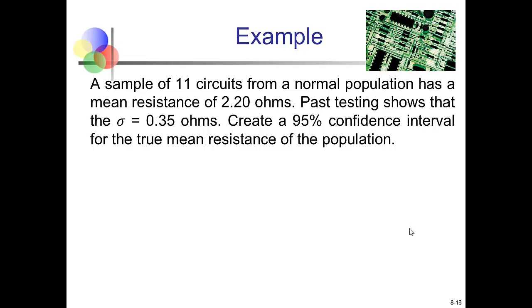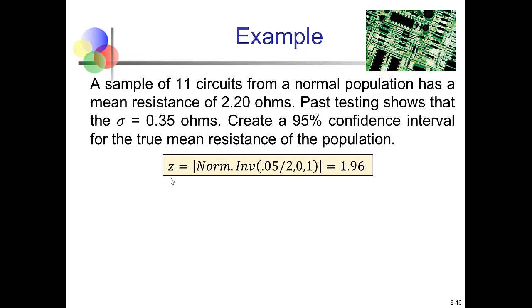Suppose we're studying circuit boards. We've collected a sample of 11 circuit boards from a normal population with a mean resistance of 2.20 ohms. Past testing has shown the true population standard deviation is 0.35 ohms. We need to create a 95% confidence interval for the true average resistance. The first step is to find the Z-critical value: for a 95% confidence interval, 5% of the area is in the two tails.